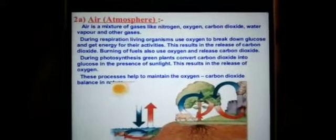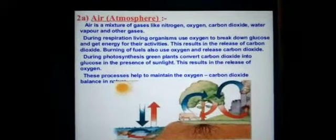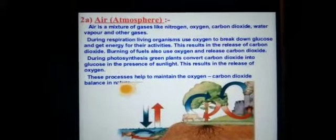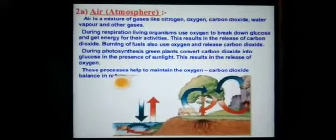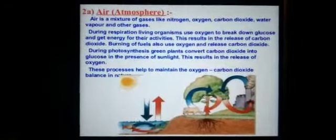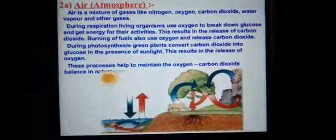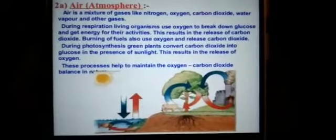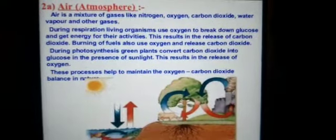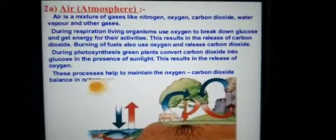Eukaryotic cells and many prokaryotic cells need oxygen to break down glucose molecules and get energy for their activities. Whatever food is eaten has to be broken down into simple molecules to release energy, and here oxygen is used to break down the glucose molecule and release energy.